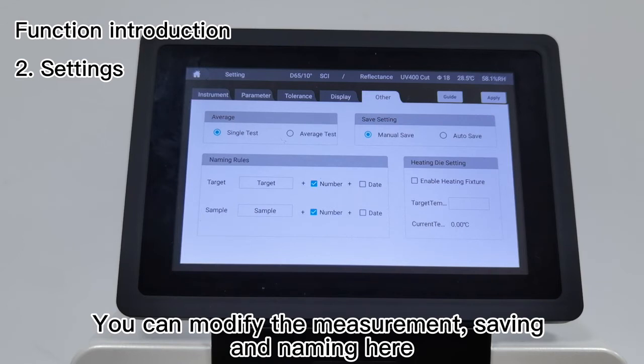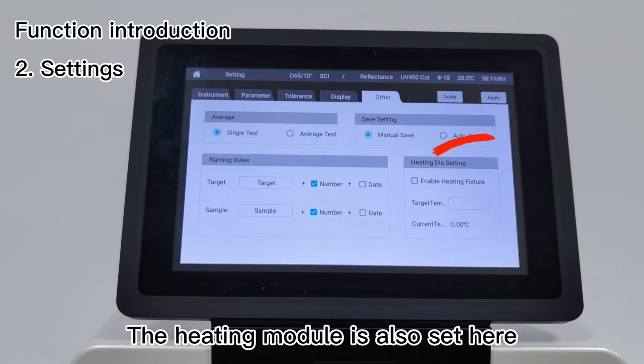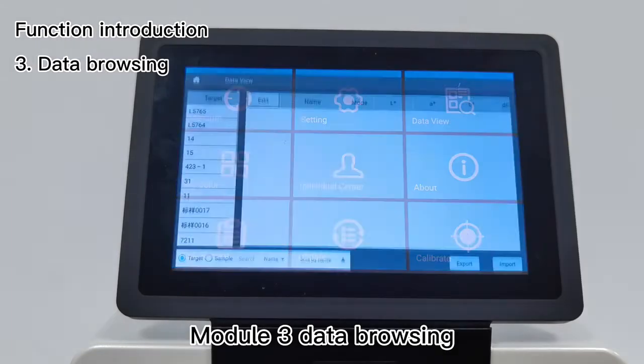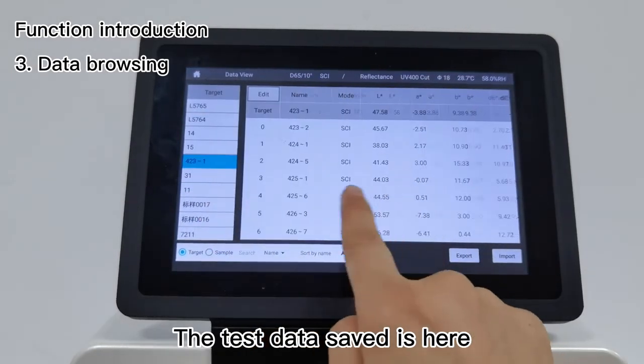Module 3 - Data Browsing: The test data saved is here. Long press to delete and call out the standard sample.